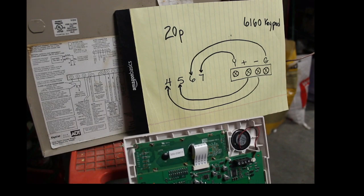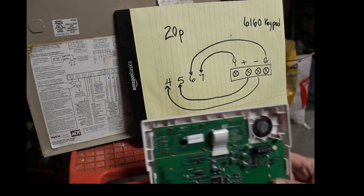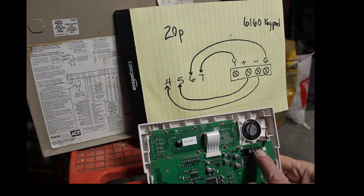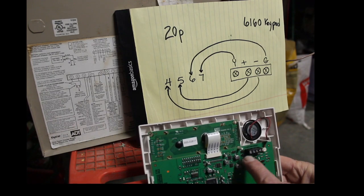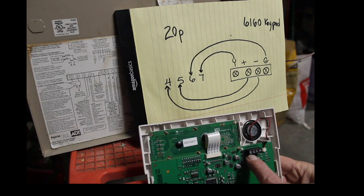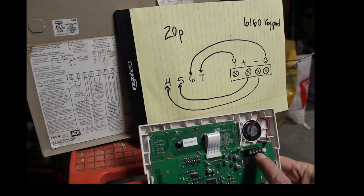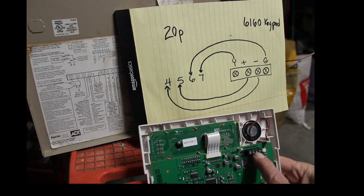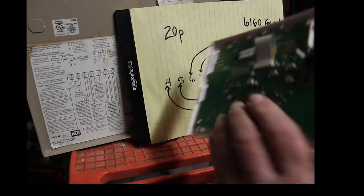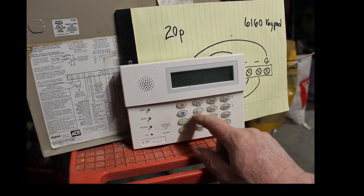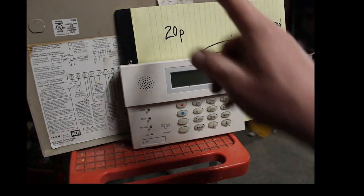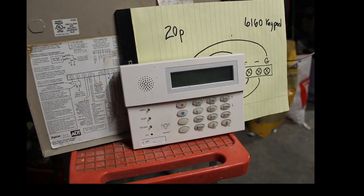But again, from left to right: the first terminal goes to terminal 7, this goes to terminal 5, next one over goes to terminal 4, and the far right one goes to terminal 6. And that is how I wire in these keypads to my 20P SafeWatch Pro 3000.